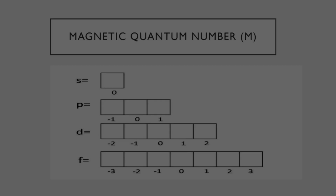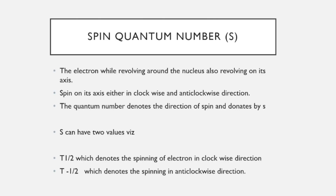The last type is the spin quantum number, which is important for NMR. The spin quantum number describes the electron while revolving around the nucleus and spinning on its axis, producing a nucleus of energy and a magnetic field. This motion is in the clockwise and anti-clockwise direction. The quantum number donated to the direction of the spin: if it is plus 1 by 2, the electron spins clockwise; if it is minus 1 by 2, the electron spins anti-clockwise.